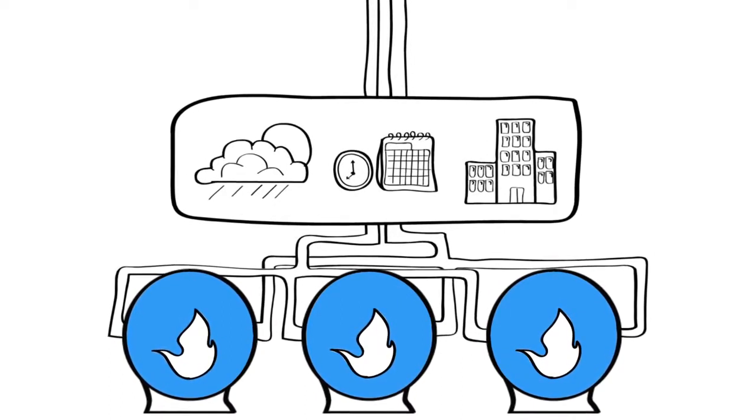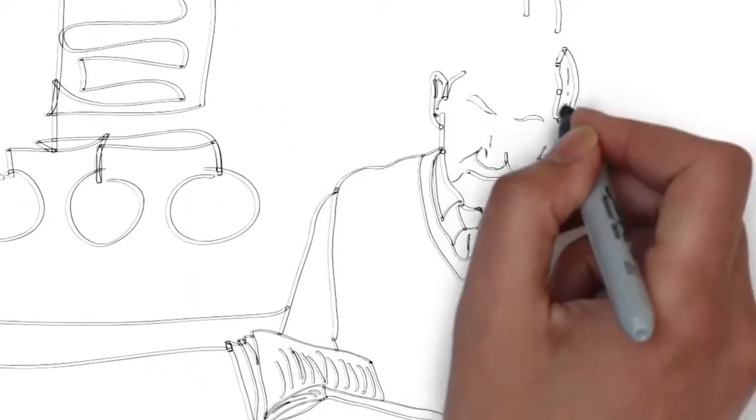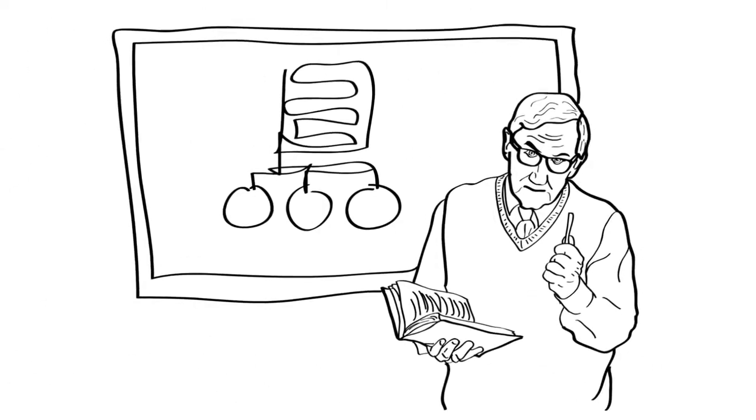You could think of these systems as a teacher sitting in front of a class of 30 or more students. The teacher knows that as a group, the class is on track.